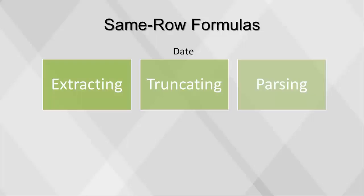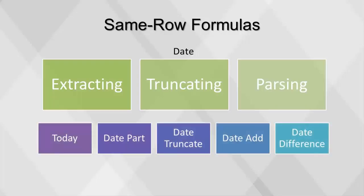The most heavily used date functions are today, used to get today's date; date part, used to get a part of a date, for example, getting the month of date will return the numeric value of the month; date truncate, which will return a date value at the beginning of a period specified, for example, truncating a date at the month level will return the first day of the month for the date; date add, which will add or subtract a certain number of periods to a date; and date difference, used to calculate the number of periods between two dates.